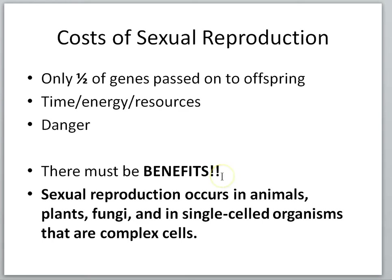In fact, if we look around the world at all living things, sexual reproduction is the predominant form of reproduction in animals, plants, fungi, and in single-celled organisms that are complex cells like amoeba, paramecia, etc. Now while amoeba paramecia can reproduce by mitosis, they also are capable of sexual reproduction.